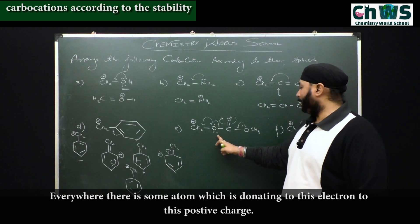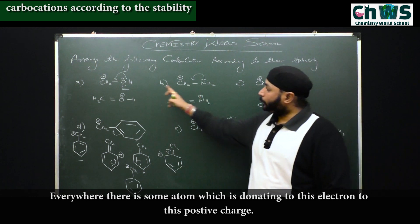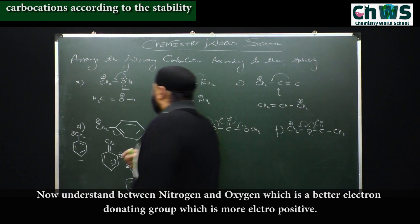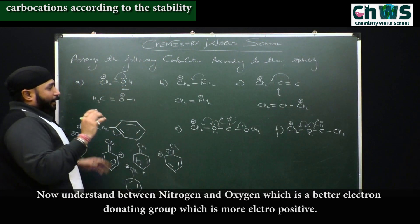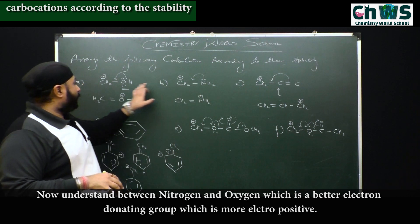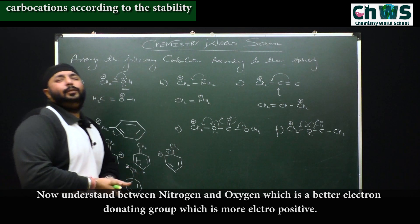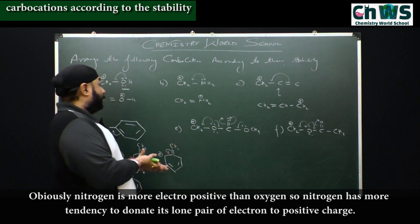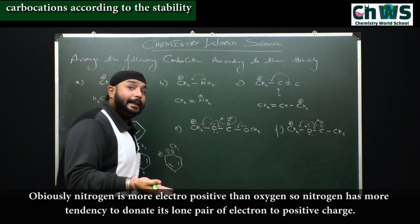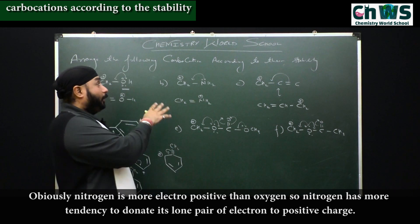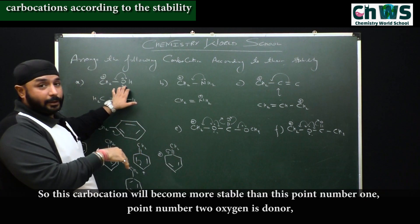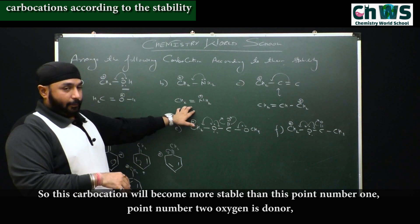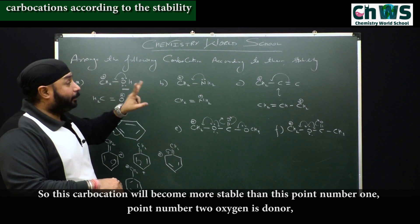The two carbocations with only normal resonance (allyl and benzyl) will be least stable compared to those with +M effect, because everywhere in the +M cases there is a heteroatom donating electrons to the positive charge. Now, between nitrogen and oxygen, nitrogen is more electropositive than oxygen, so nitrogen has more tendency to donate its lone pair to the positive charge. Therefore, the NH2-adjacent carbocation (B) is more stable than the OH-adjacent carbocation (A).